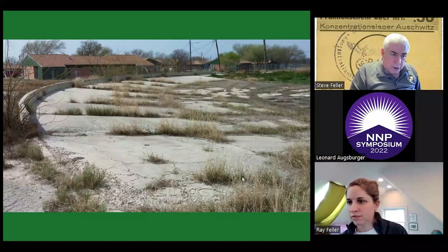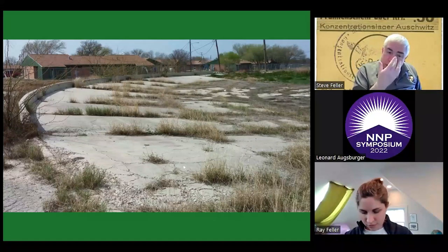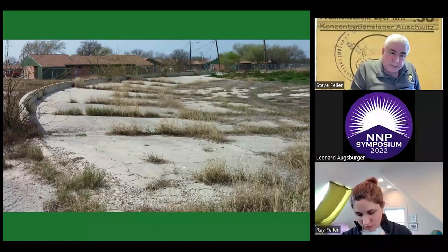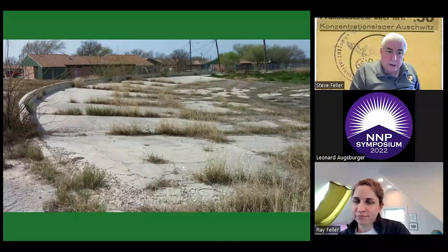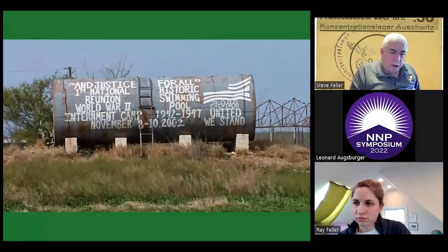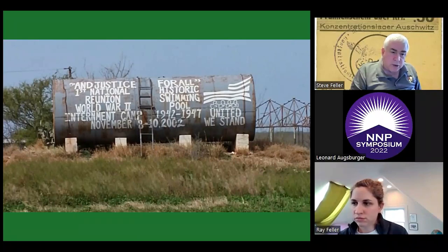Ray and I went to Crystal City. Behind school buildings and a big concrete slab are the remains of the swimming pool. It was gigantic, with separate sections for Japanese internees and German internees. They had their own bath houses and food distribution areas. Sometimes they traded among themselves but really kept separate — they had different likes and dislikes. There was actually a reunion held in 2002 by the internees: 'Justice for All — the first national historic reunion at the swimming pool, World War II internment camp, 1942 to 47.'